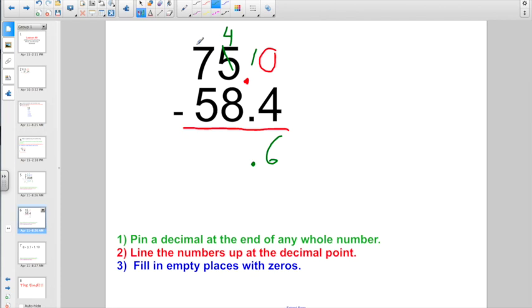4 minus 8? Can't do it. Got to go and do regular old borrowing again. Cross out the 7. Pay the 4. Making them 14. 14 minus 8 is 6. And lastly, 6 minus 5 is 1 for a final answer of 16 and 6 tenths.